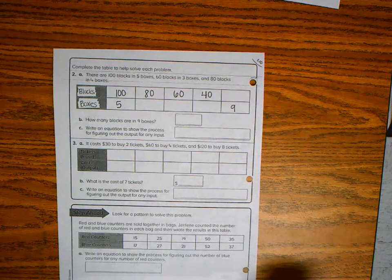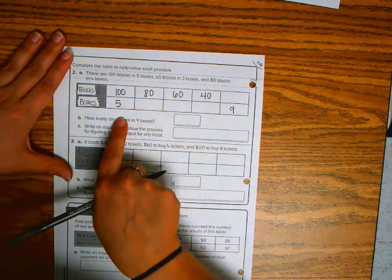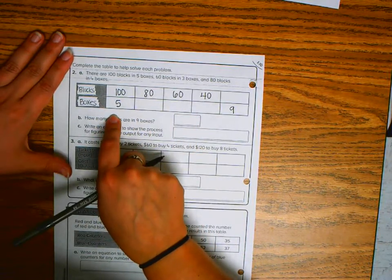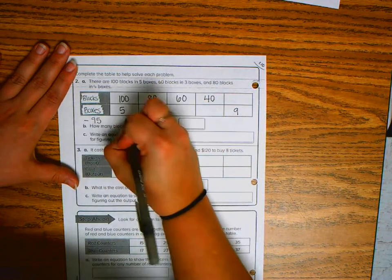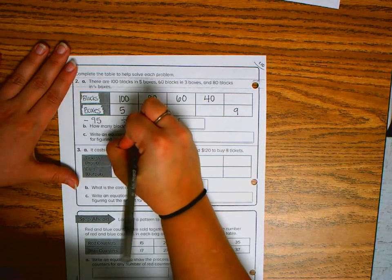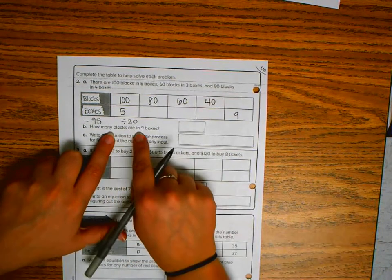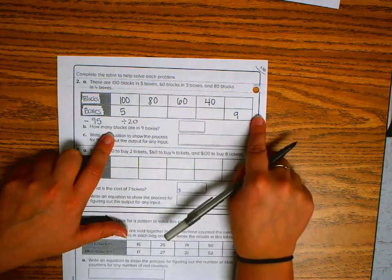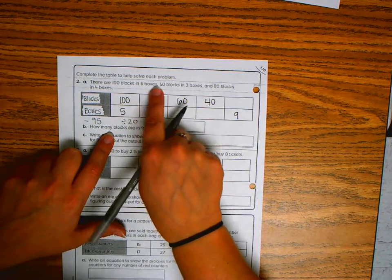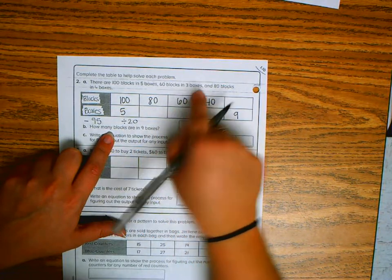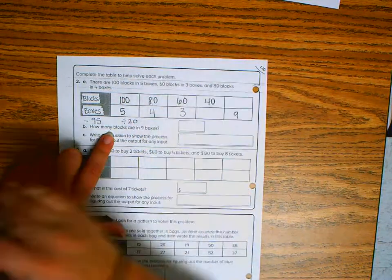This next problem repeats the process. I know I'm going to a smaller number. If I look here, one hundred and I'm going all the way to five, so I'm either subtracting by ninety-five or dividing by twenty. How many blocks are in nine boxes? We know that there are one hundred blocks in five boxes, sixty blocks in three boxes, and eighty blocks in four boxes.